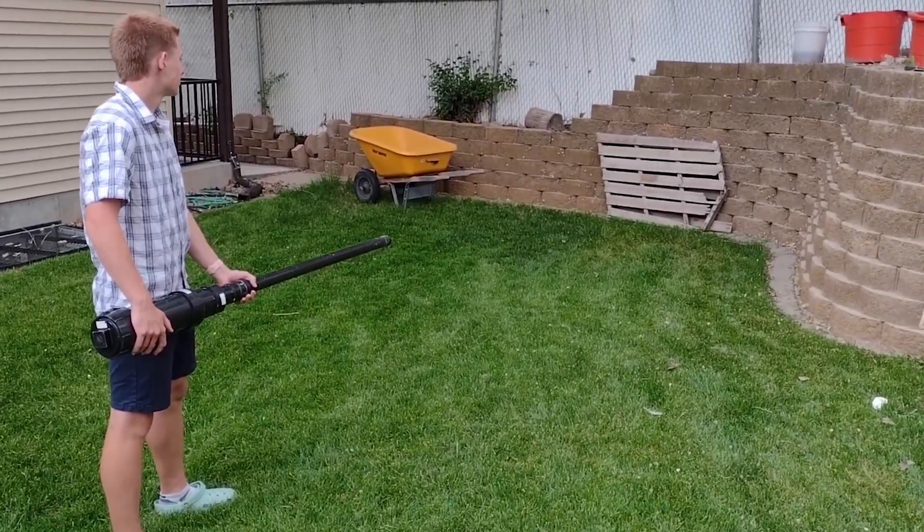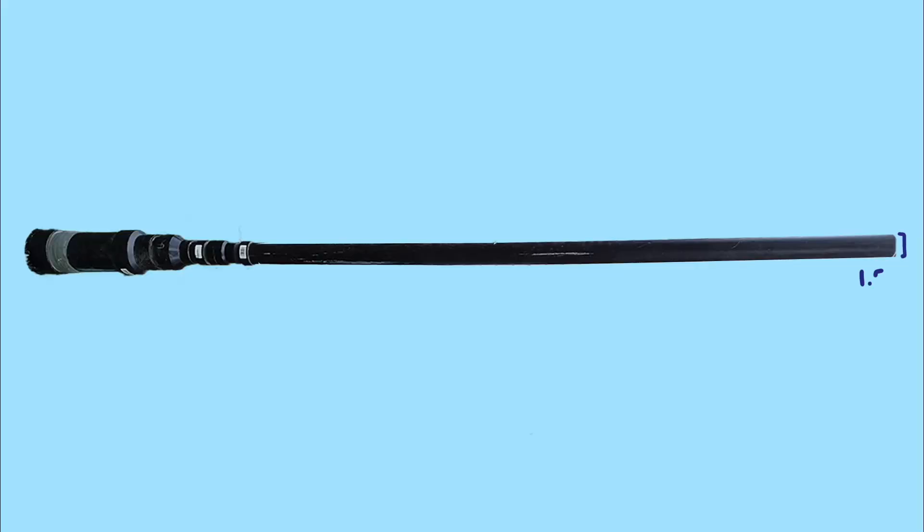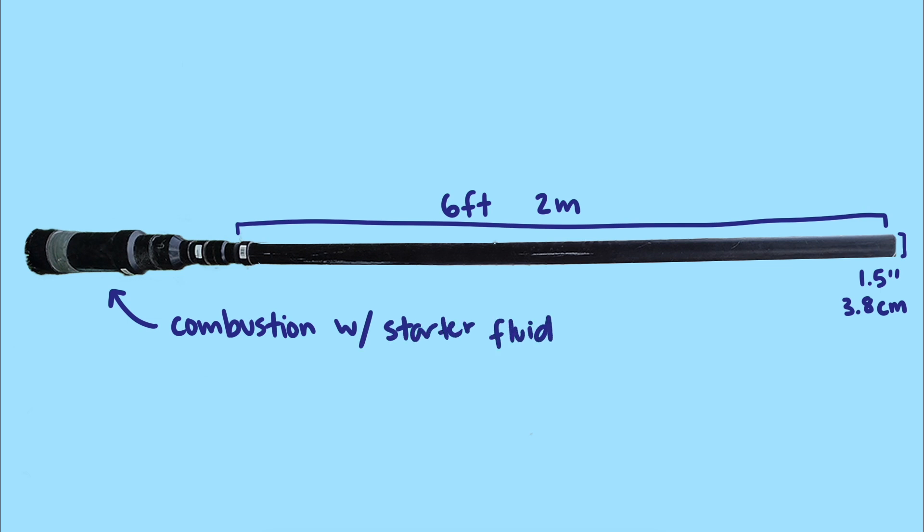Years ago I built a potato gun, and let me tell you, it really hurls potatoes. It has a 1.5 inch or 3.8 centimeter diameter barrel, and it's 6 feet or 2 meters long. It's a combustion gun that uses starter fluid as fuel.